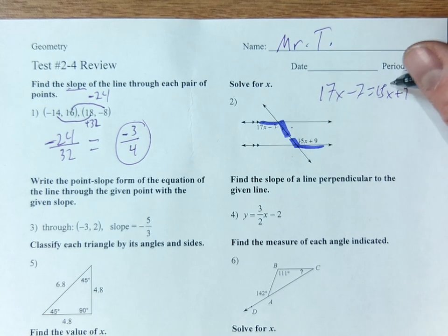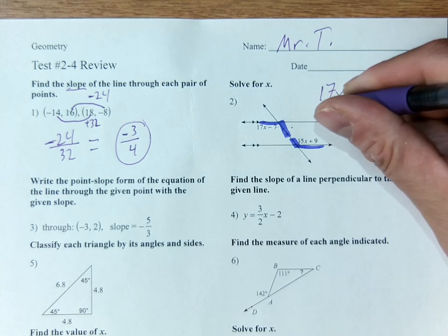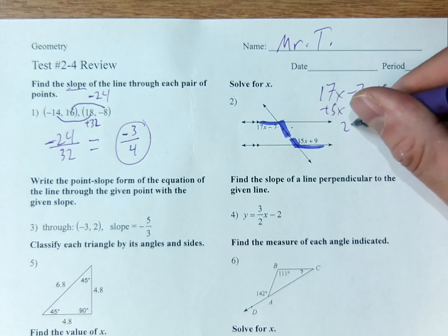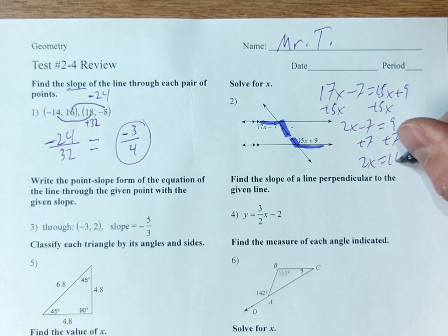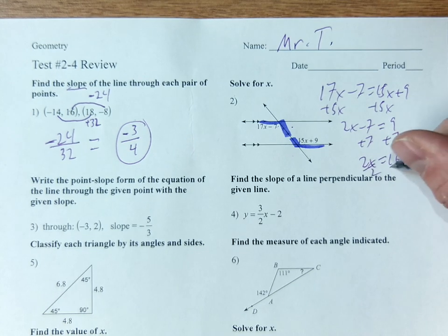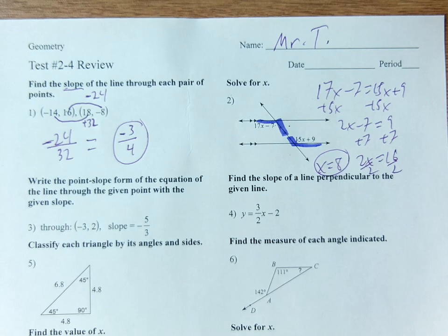So decide if it's equal or supplementary. That's the majority of the question right there. After that you can solve for x. Same steps you've always used. Take 15 from 17 to get 2. Add 7 to 9 to get 16. And divide 16 in half to get x is 8.